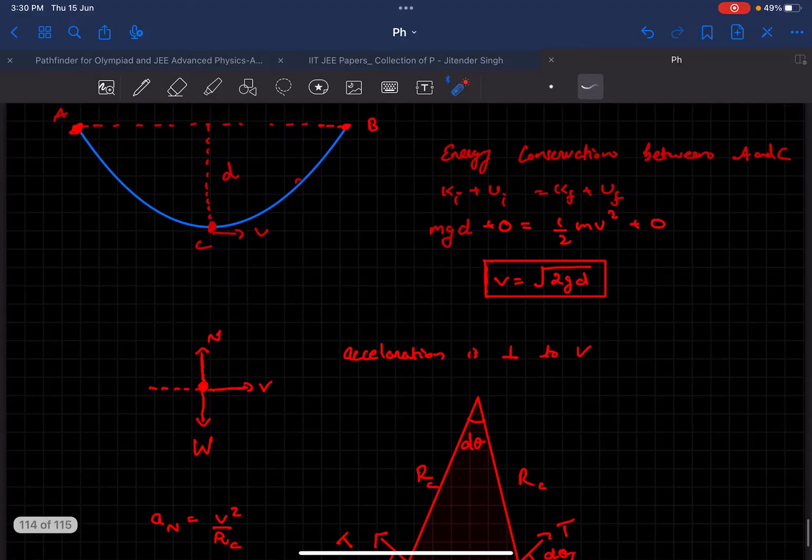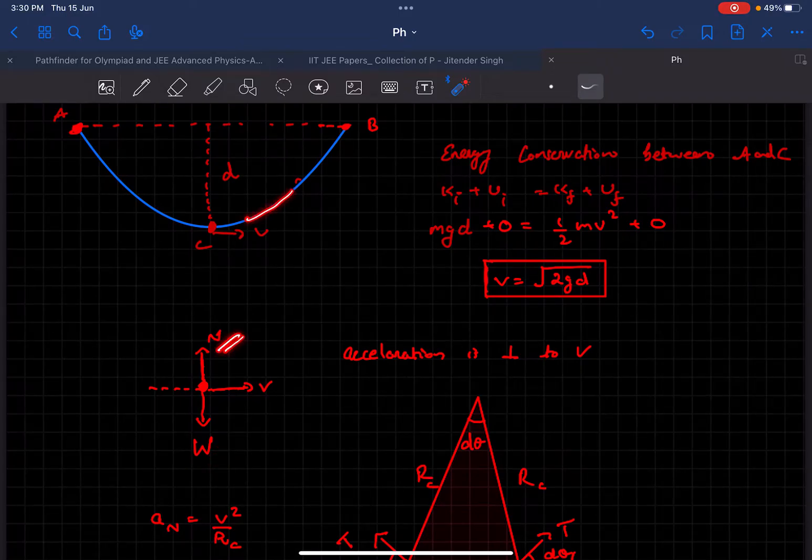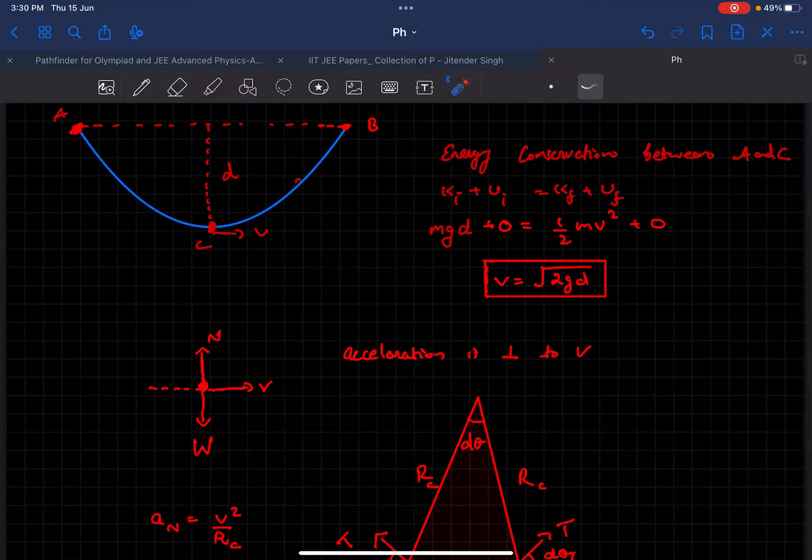If you look at the FBD of the bead at point C, we'll have the weight of the bead and the reaction force by the rope on the bead. The thing is there are no tangential forces acting on it, which means the acceleration will purely be perpendicular to the velocity.